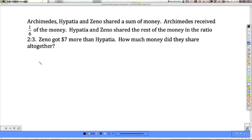Well, it looks like there's a lot going on in this problem. But if we take it one step at a time, we can slowly build up our bar model and get a little bit better idea of what's going on. So Archimedes, Hypatia, and Zeno, and I'll begin as usual by giving one unit to each one of them.